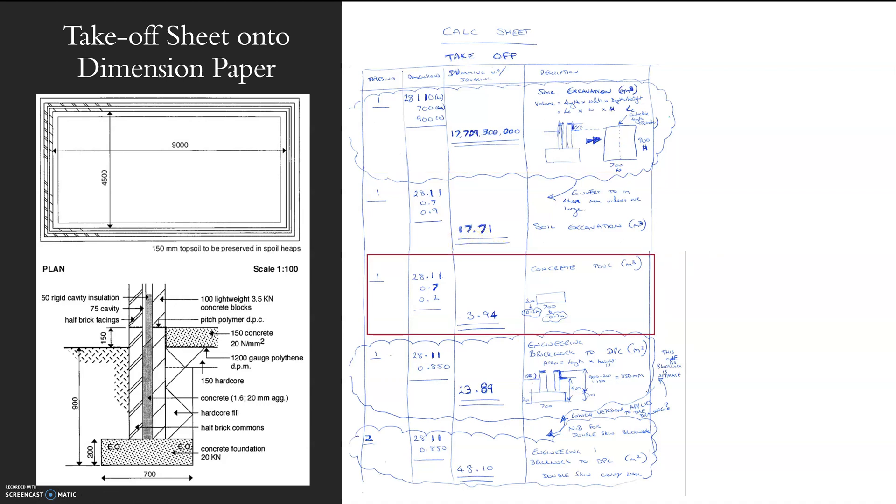My soil excavation in meters cubed is 17.71. If I move on and look at my concrete pour, again my concrete pour will be in meters cubed, it's a volume. If you go to the NRM, the new rules of measurement, if it's only a screed pour, so it's really small, then you will be doing that in meters squared because you're only doing a coverage.